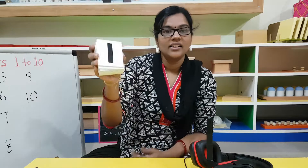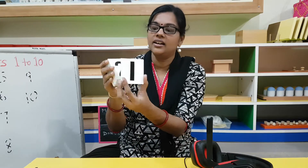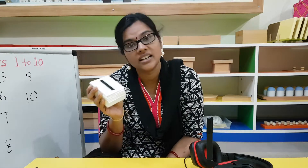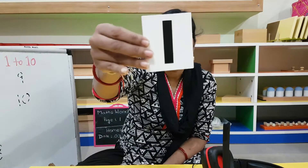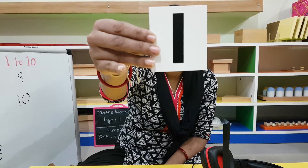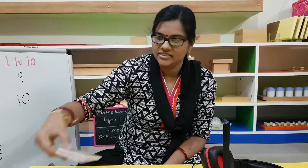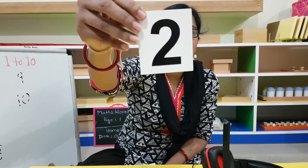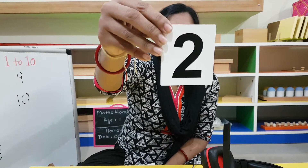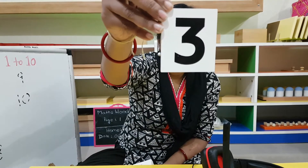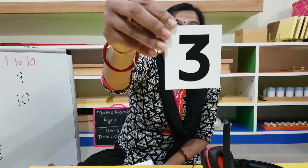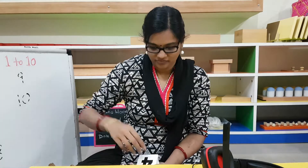I know you all remember these number cards that we used to play some games with in the last term. Today we are going to use them for identifying the numbers. Can you all come with me and identify the numbers? Remember this number — what number is this? 1! Correct. What is this? 2! Very good. This is number 3 — super!